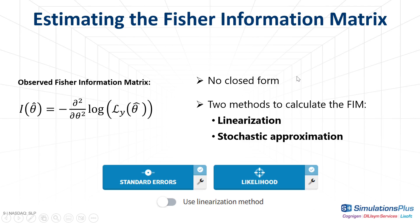Because the log likelihood cannot be calculated in closed form, the same applies to the Fisher information matrix. Two different methods are available in Monolix for the calculation of the Fisher information matrix: by linearization or by stochastic approximation. The linearization method is faster and also applies to the task of estimating the log likelihood. However, stochastic approximation gives more accurate results. I will now explain the main steps of the stochastic approximation.